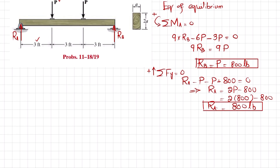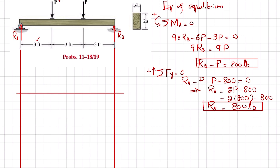To draw the shear force diagram, I'll draw vertical lines from the ends of the beam with the horizontal axis in feet. The shear force will be in pounds. At point A, the shear force Ra = 800 pounds — let each division equal 400. Moving from A to the first load point, there is no other force, so shear remains constant at 800.